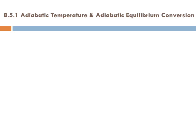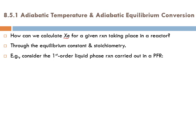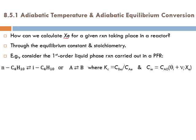Let's talk about adiabatic temperature and adiabatic equilibrium conversion. How can we calculate equilibrium conversion Xe for a given reaction in a reactor? We can calculate it through the Kc expression and stoichiometry. Let's take an example: consider a first-order liquid-phase reaction carried out in a plug flow reactor.